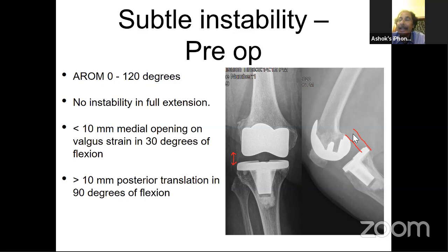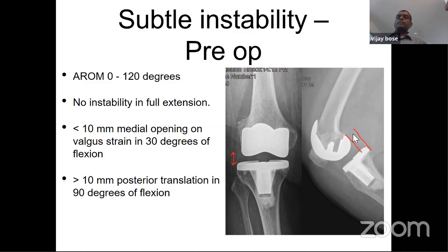Any other opinions? I would go for a TC3. In chronic situations, she probably ruptured her cruciate, and in chronic situations we have secondary laxity — other structures also become lax. So I would go to a TC3 straight off. Anyone consider a hinge? A hinge would not be necessary — LCCK as a backup should be good enough. I agree with Sachin's plan as first line, but on table, if you're having surprises, it's good to have a backup.